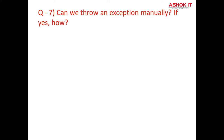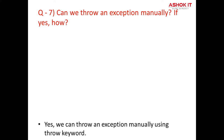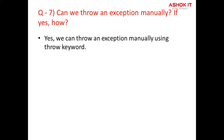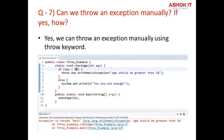Question number seven: Can we throw an exception manually? And if yes, how? Yes. We can throw an exception manually using the throw keyword. The syntax is: throw instance of throwable type. You can observe this example — here at line number four, throw new ArithmeticException. This is how we are throwing that exception manually using the syntax: throw the instance of throwable type.